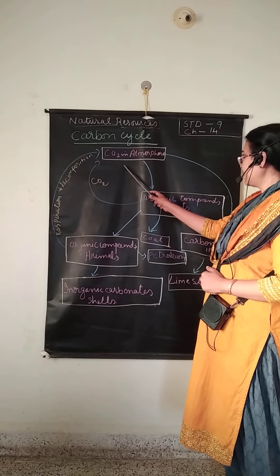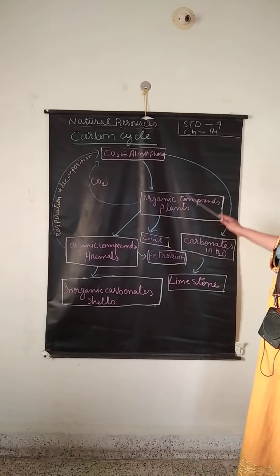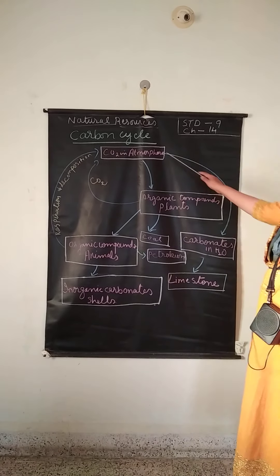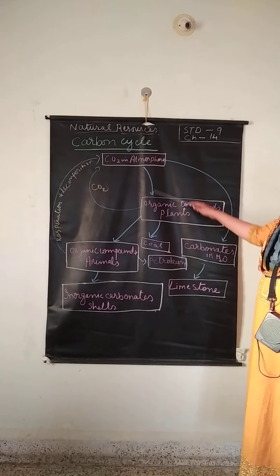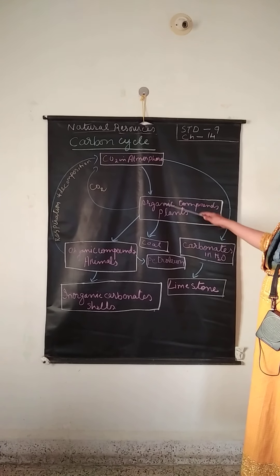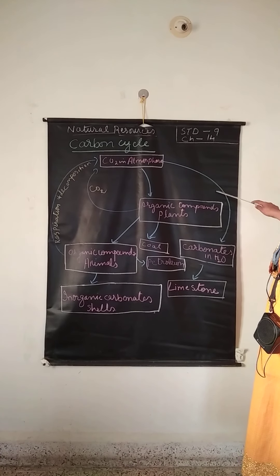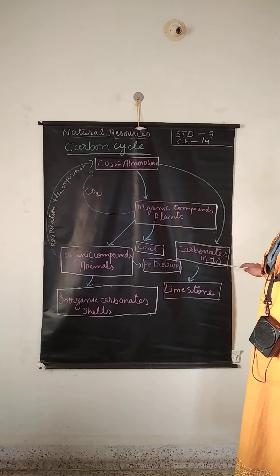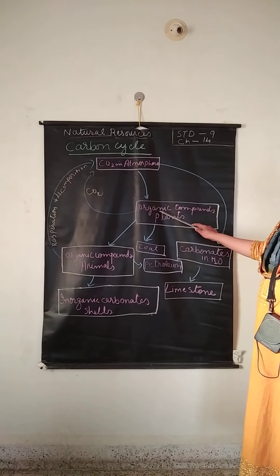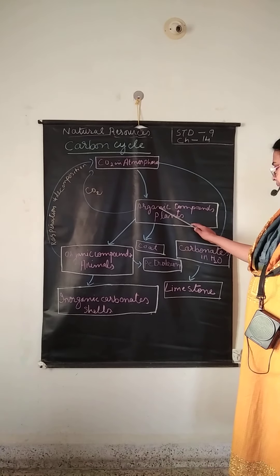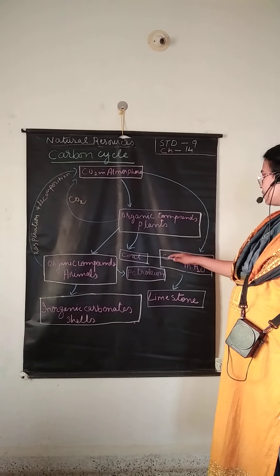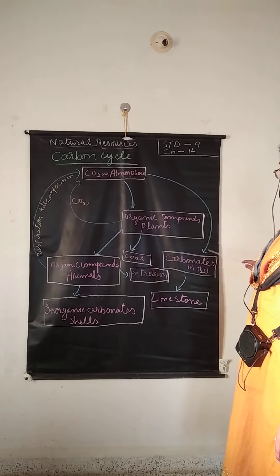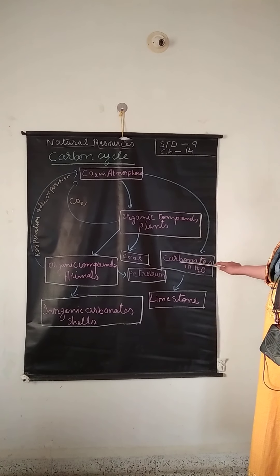Carbon dioxide which is present in the atmosphere is utilized by the plants during photosynthesis. A part of this carbon dioxide is also used for the formation of carbonates in water. When plants are buried under the soil, after many years, due to some chemical reaction and intense heat, they get converted into coal. The carbonates present in the water get converted into limestone.